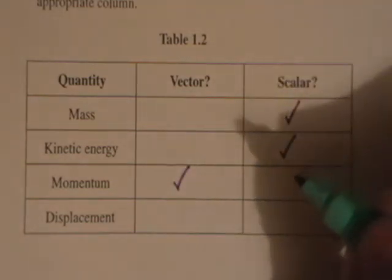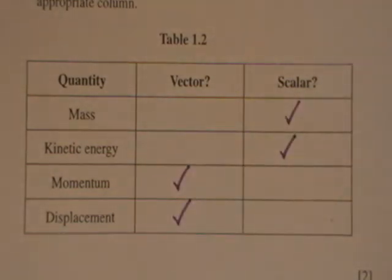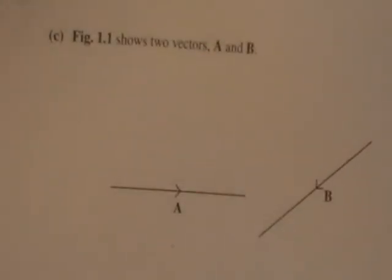Part C: Figure 1.1 shows two vectors A and B. By drawing on Figure 1.1, construct the vector A minus B.